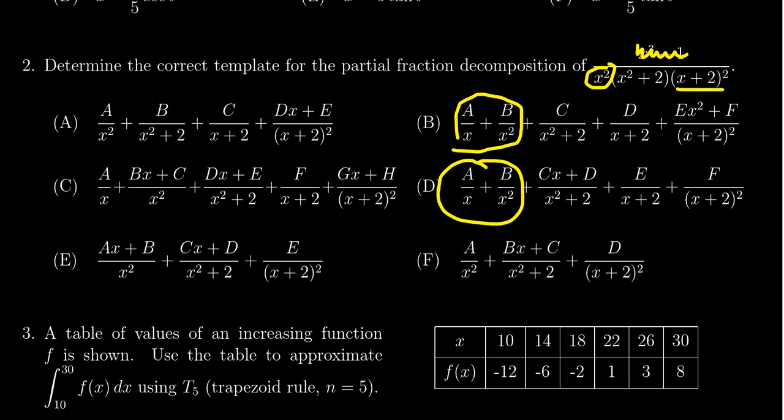So honestly, D is looking like the best answer right now. I think with the information I have, I could determine that because notice A doesn't have an A over x. C doesn't have an A over x squared. Same thing going on here.